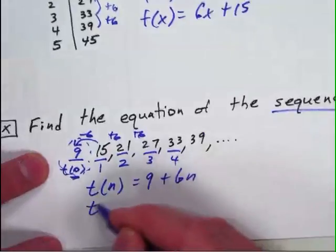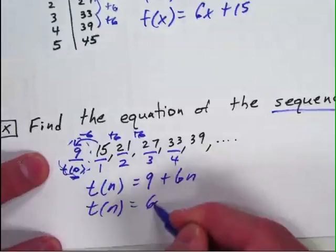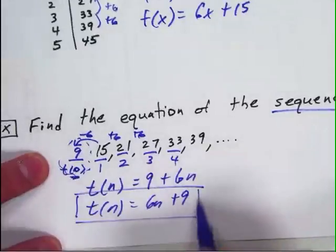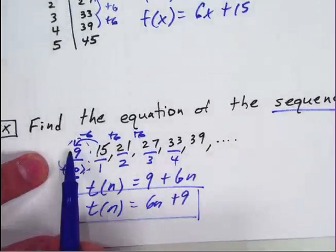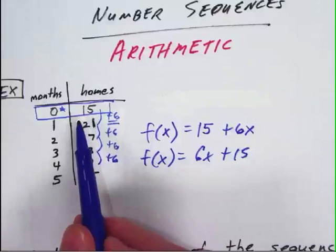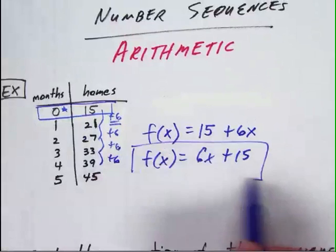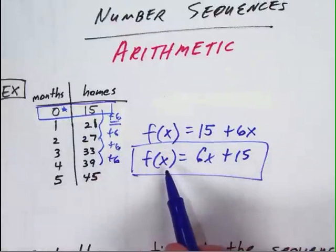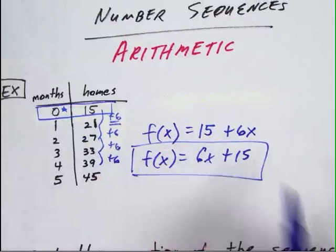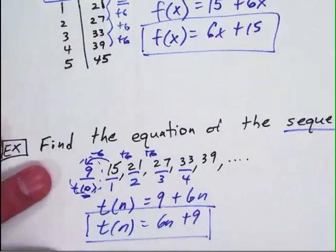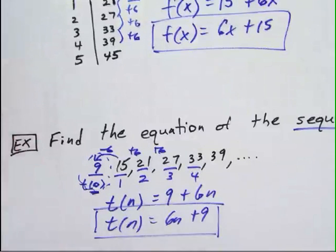Now most of us would rewrite that as t of n equals 6n plus 9, but you get the idea. There is a difference between this equation right here for the sequence, being that I have to calculate the zero value, versus in a real life context, I know the zero value, and I can include that number right in my equation. We end up with f of x equals 6x plus 15, versus t of n equals 6n plus 9. That is the difference between a real life event and a number sequence.